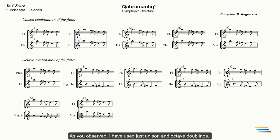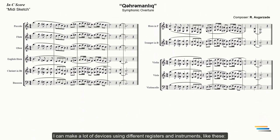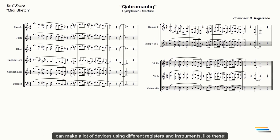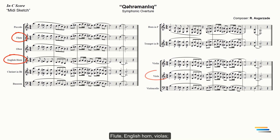As you observed I have used just unison and octave doublings. I can make a lot of devices using different registers and instruments like this: flute, English horn, violins; flute, clarinet, oboe, violins and etc.